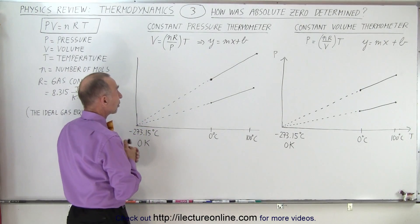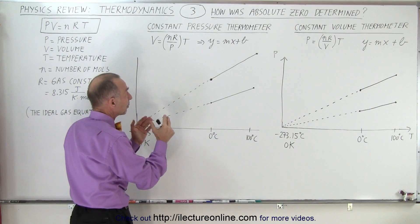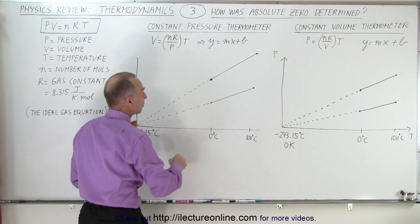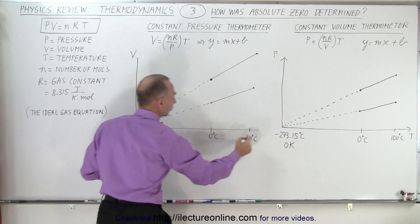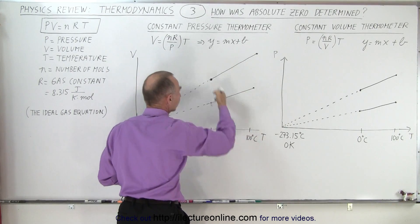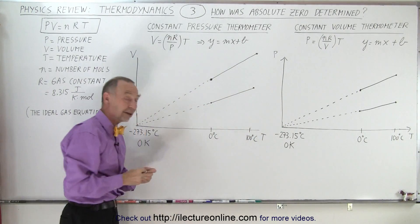And over here, we have what we call a constant pressure thermometer, where the pressure remains the same but the volume is allowed to change. And so we measure the volume, and I should write that down over here, so the volume versus temperature. We measure the volume at 100 degrees Celsius and the volume at 0 degrees Celsius.